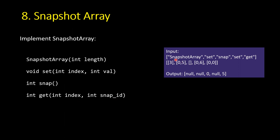For example, you create a snapshot array of length 3, then set value 5 at index 0, then call snap which returns snap ID 0. Then you set value 6 at index 0. Now when you call get with index 0 and snap ID 0, it returns 5 — not 6 — because 5 was the value at the time of the snapshot, and the update to 6 happened after the snapshot was taken.